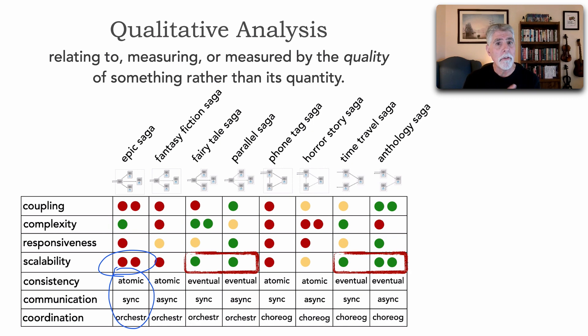And so here we can start to drive our decisions about what levels of scalability we need and how it compares qualitatively to other techniques of building that distributed architecture. And we find, of course, that the anthology saga, which is eventual consistency, asynchronous, and choreographed, does offer the best level of scalability, separate from metrics. Because a lot of times we need to make these decisions when in fact we don't have those metrics.